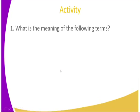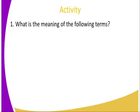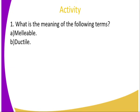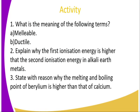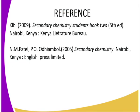Let's see whether we have understood the goals of this lesson by answering the following questions: What is the meaning of the terms malleable and ductile? Explain why the first ionization energy is higher than the second ionization energy in alkaline earth metals. State the reason why the melting and boiling point of beryllium is higher than that of calcium.